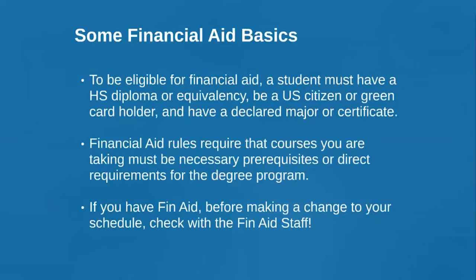If you need to make a change to your schedule, there are two people you're going to consult. One is your advisor — you don't want to make changes on your own because you don't have the same information your advisor does. And if you're a recipient of financial aid, check with the financial aid staff to make sure you know how that change may or may not affect your financial aid. You don't want the federal government asking for money back unexpectedly. Especially if it involves withdrawing from a class, talk to an advisor and financial aid. Nothing willy-nilly.